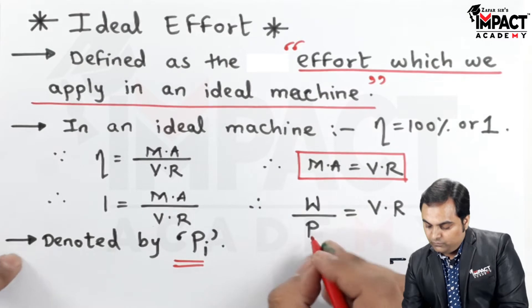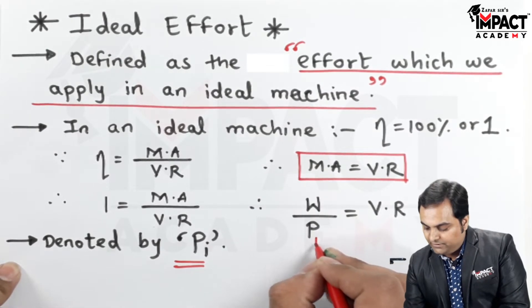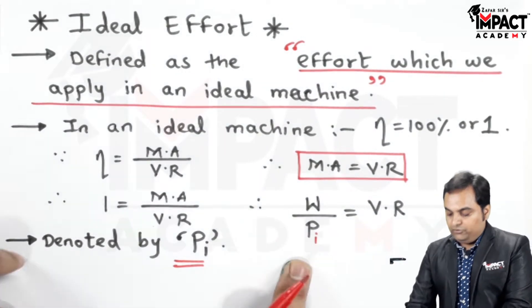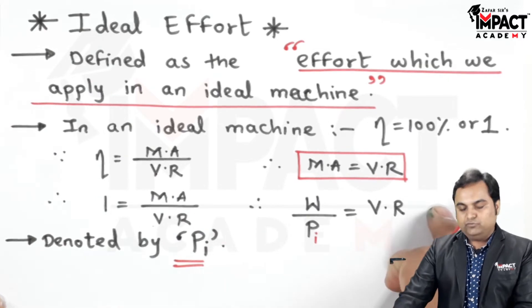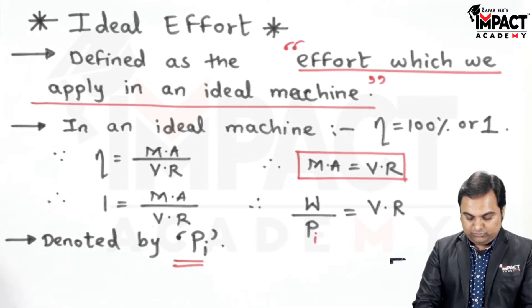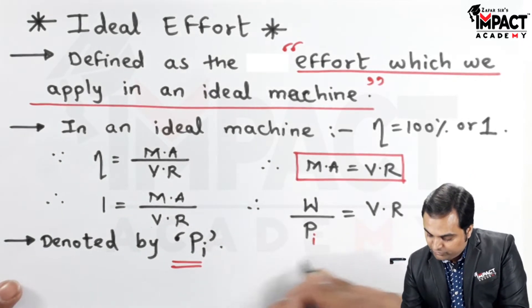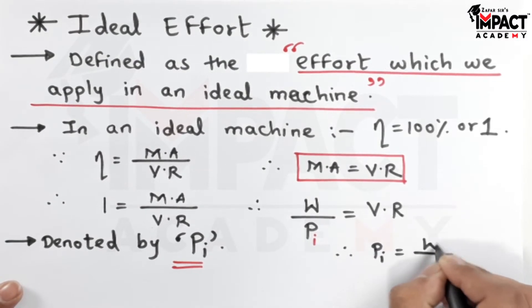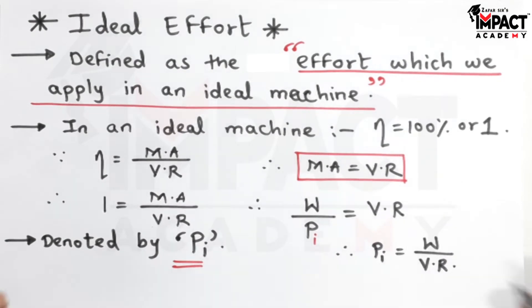Here we have effort. I'm just putting a suffix i, so it becomes ideal effort. Pi would be shifted over here, VR comes onto the other side, so therefore the formula becomes W upon VR, which is Pi = W/VR.